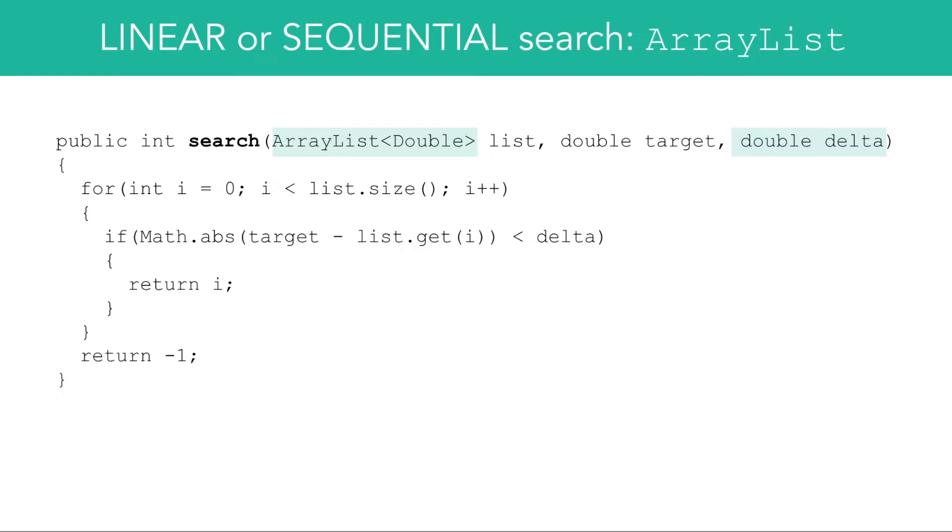When searching for a double value, we need to do an additional mathematical step to make sure that the value is close enough. Notice in the method header, we have an additional parameter called delta that stores the difference. Notice as well that the condition is the absolute value of the difference between the target value and the element. That value should be less than the acceptable margin of difference, or delta. With doubles, we are looking for a close enough element to the target value.